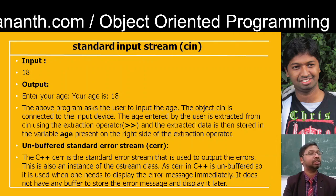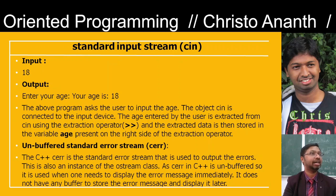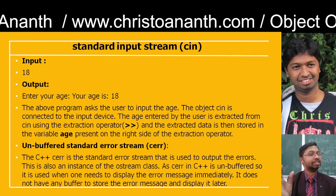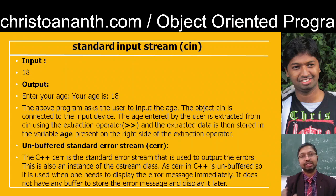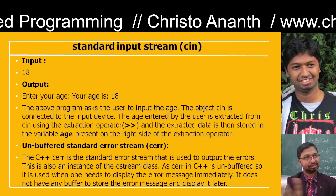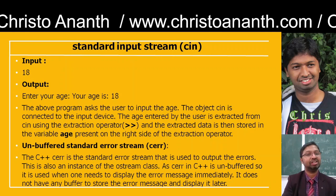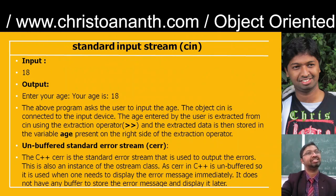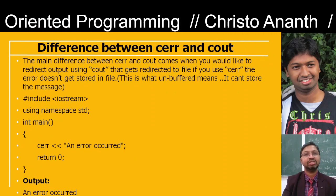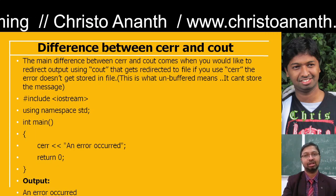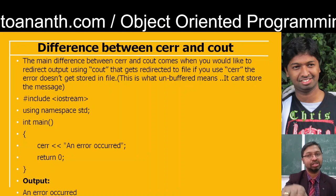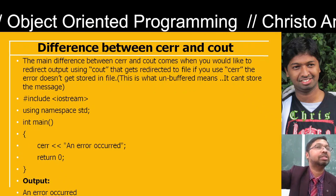Then you have the unbuffered standard error stream — cerr. So cerr is the standard error stream that is going to output the errors. It is an instance of the output stream class. In C++, cerr is unbuffered, which means you have to display the error message immediately. It does not store the error message in a buffer and display it later. The difference between cerr and cout: using cout, the output gets redirected and stored; using cerr, the error does not get stored in a file — that is the only difference.